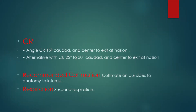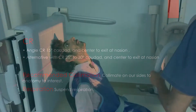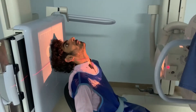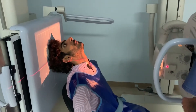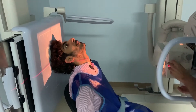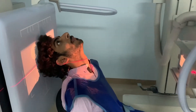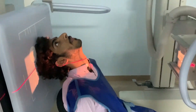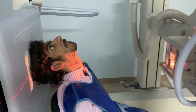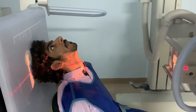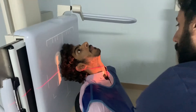Center ray: midway between gonions, approximately 2 cm anterior to the level of EAM. Collimate on four sides to the anatomy of interest.